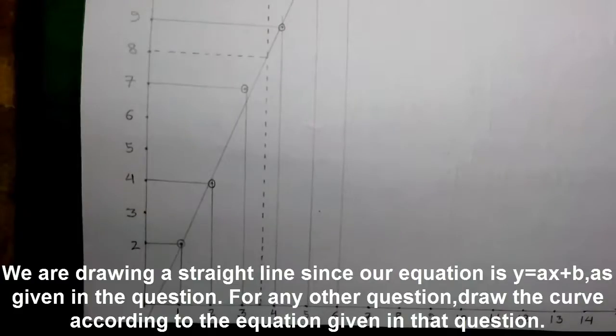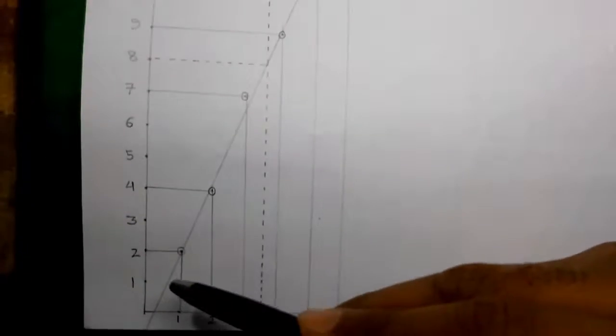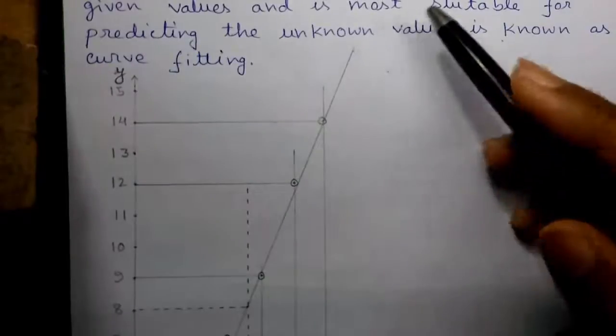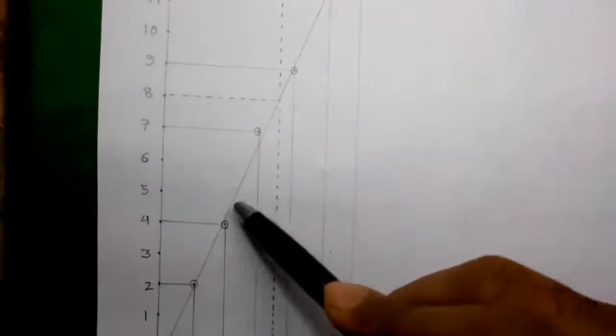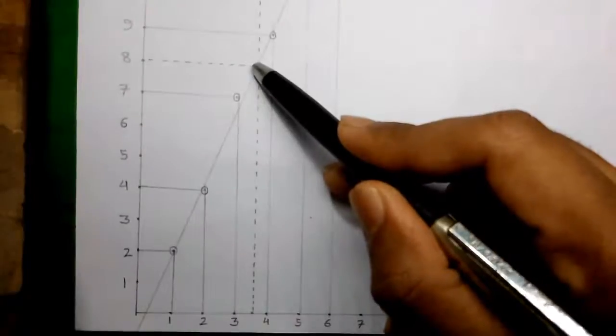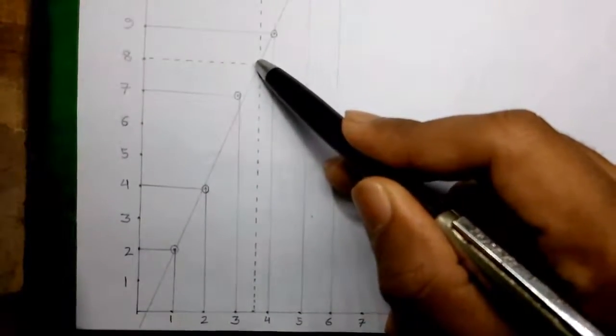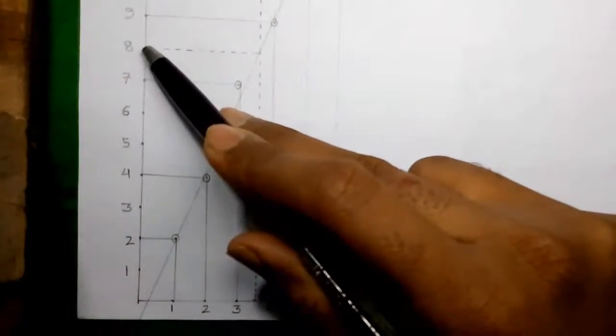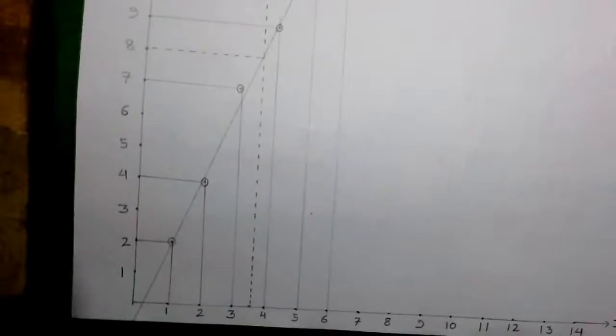Next, we draw a straight line which connects or passes through the maximum number of points on the graph. Here is our line starting from the bottom and going upward, connecting maximum number of points. As you can see, not all points lie exactly on the line — they are scattered around it. Now let's find out the value of Y for X equals 3.5. This is 3, this is 4, and 3.5 is in between. We draw a dotted vertical line at X equals 3.5 upward until it intersects our straight line, then connect that intersection point horizontally to the Y axis. That intersects at Y equals 8. So for X equals 3.5, the value of Y is 8.